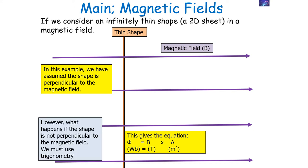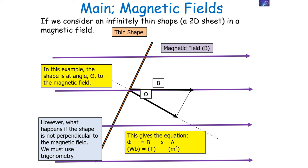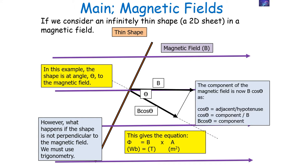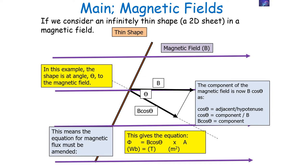However, if the shape is not perpendicular to the magnetic field, we have to use trigonometry. We work out the component of the magnetic field using cos equals adjacent over hypotenuse, so cos equals the component over B. Therefore the component of the magnetic field in this direction is B cos theta. This allows us to rearrange the equation to phi equals B cos theta times A, which is the full equation linking magnetic flux and magnetic flux density.